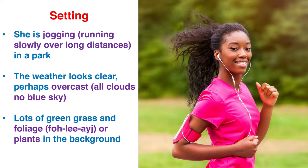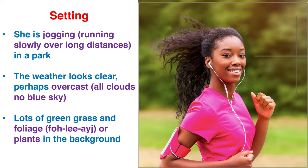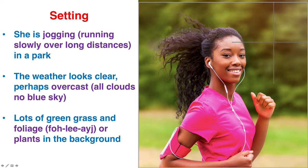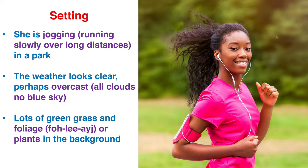Hopefully you have a lot of detail in your description. Let's go through this now. Firstly, let's talk about the setting. You can say she is jogging or running slowly over long distances in a park. The weather looks clear, or at least like it's not raining, but perhaps overcast, which means all clouds with no blue sky. There's lots of green grass and foliage in the background. Foliage would be all of this green stuff — trees, shrubs, grass, plants in general. So we can say there's lots of foliage behind her.